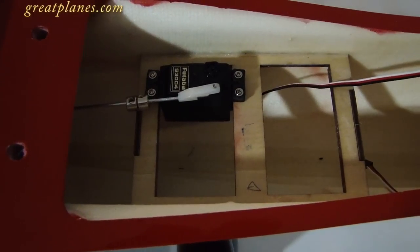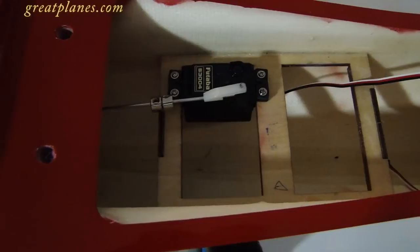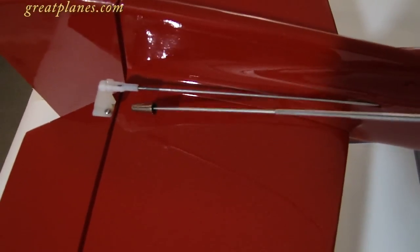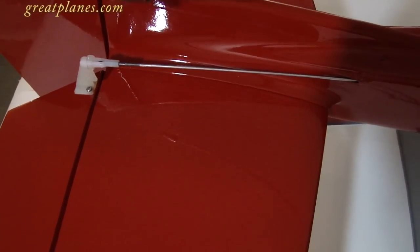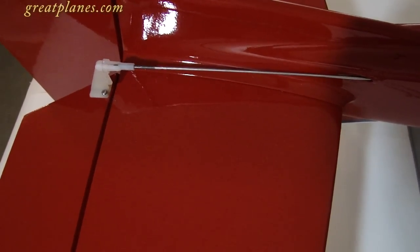This area here is where our rudder servo is going to be installed. On to the tail. You notice we have our control horn secured to our flight control. We have our clevis and clevis retainer, all installed.